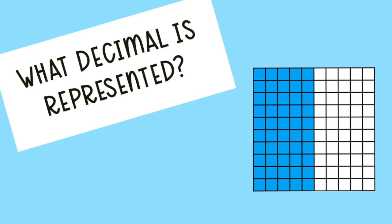So in this example, what decimal is represented? Well, the whole has been divided into 100 equal parts. 50 of those parts are shaded. So we say 50 out of 100 or 50 hundredths. 50 out of 100 would be a fraction and 50 hundredths is the decimal.